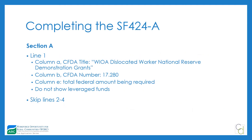Starting with Section A of the 424A, for WORK we are just looking at line one. In column A, you have the CFDA title: WIOA Dislocated Worker National Reserve Demonstration Grants. Column B is the CFDA number, 17.280. Column E is your total federal amount being requested. You do not show leverage funds on this form, and if you have program income, don't include that here — you're only asking for the federal funds. Skip lines two through four since we're dealing with a single grant opportunity.